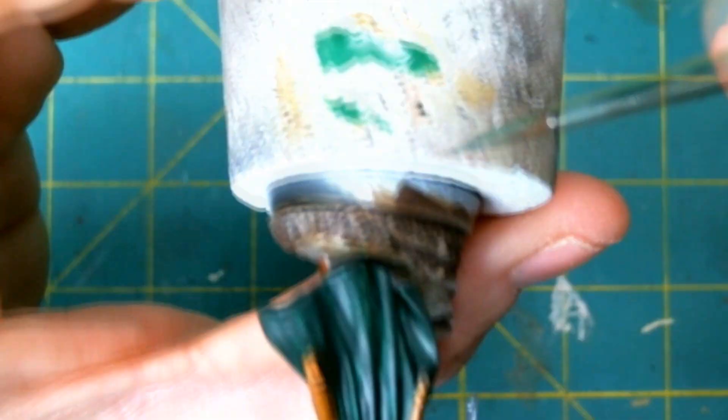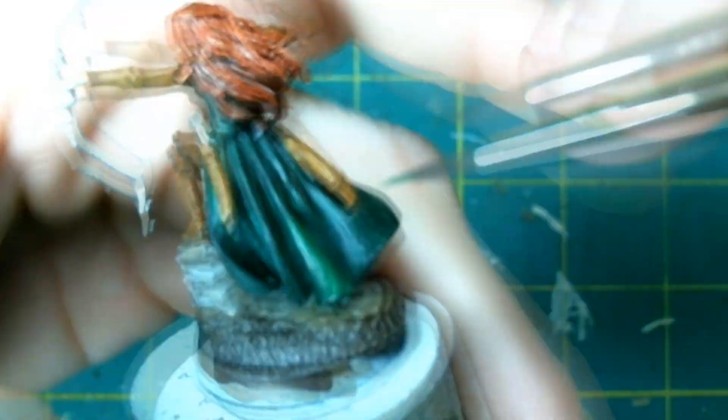Now for the cloak, I started with Citadel's Caliban Green. And then I started working with wet blending and layering it with Citadel's Snot Green. And those are really only two colors that I used for the cloak.